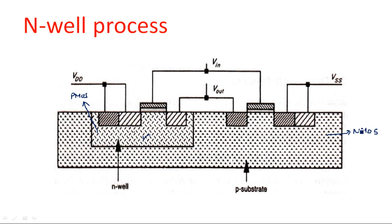In the N-well structure, the PMOS is connected between VDD and output, and the NMOS transistor is connected between output and ground (VSS). The two gates of the NMOS and PMOS transistors are connected together to the input terminal. Whatever the fabrication process — N-well or P-well — the PMOS should be in the pull-up position between VDD and output, and NMOS in the pull-down position between output and ground. Combining these two CMOS structures gives the twin-tub process.